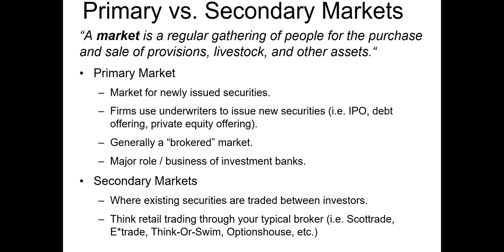When we talk about markets, we're referring to a regular gathering of people for the purchase or sale of provisions, livestock, and other assets. Markets can take many forms: a direct search market where buyers and sellers seek each other out, a brokered market where brokers buy and sell securities on behalf of their clients, dealer markets where dealers maintain inventory of assets from which they buy and sell, and auction markets where traders converge at one place to trade.